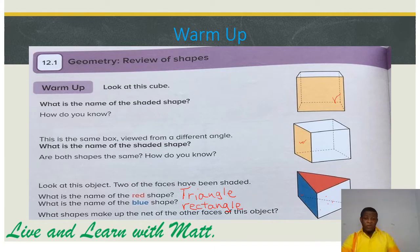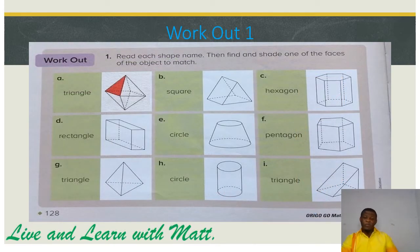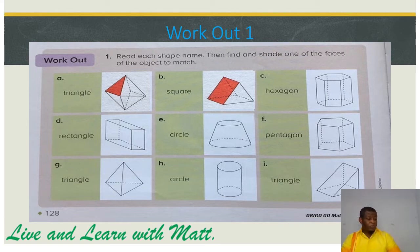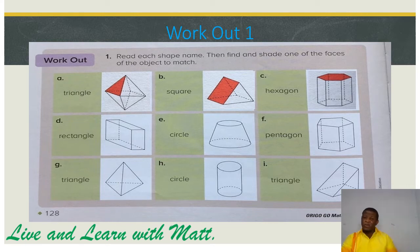Now let's take a look at the workout. Workout number one: read each shape name, then find and shade one of the faces of the objects to match. So part A — triangle. What side can we shade for triangle? Part B is square. So this is the part for square. Part C — hexagon. Hexagon means six sides, right? Six sides. So we are going to shade the side that has six sides, as you can see on the screen.